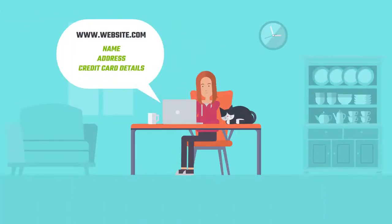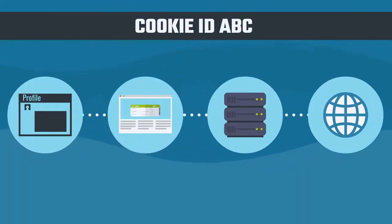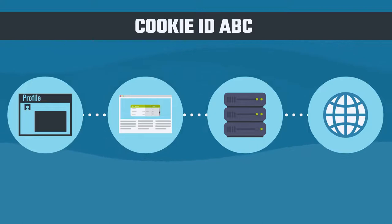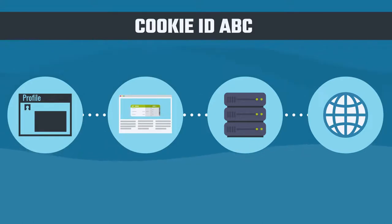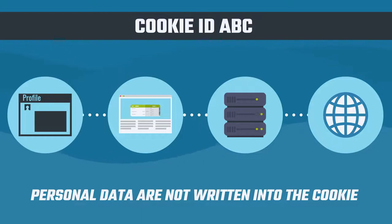Ann books a cheap flight to London and types in her name, address, and credit card details. Ann's name, address, and flight details are transferred to www.website.com, who store that information in a file in their database on their secure server. With the reference cookie ABC, the personal data are not written into the cookie.